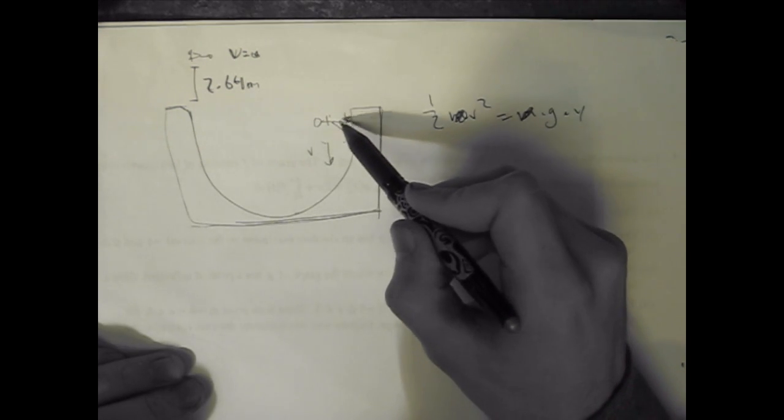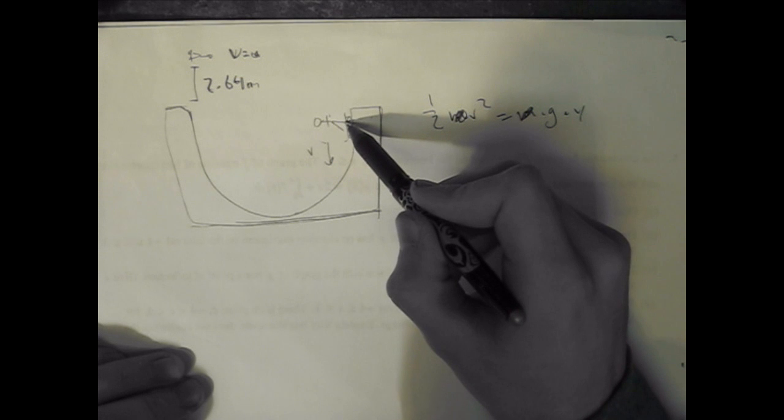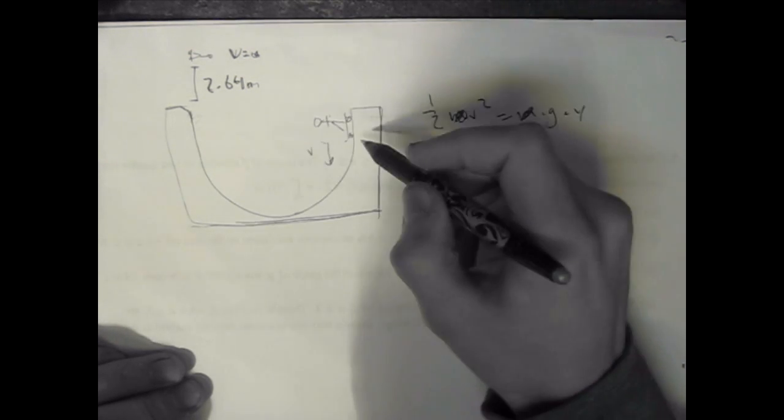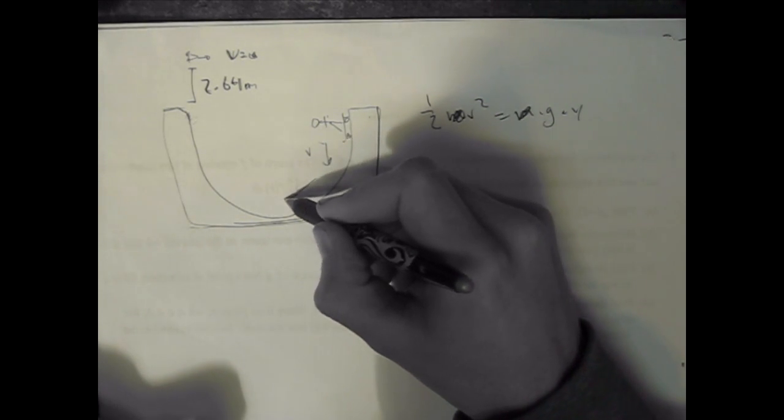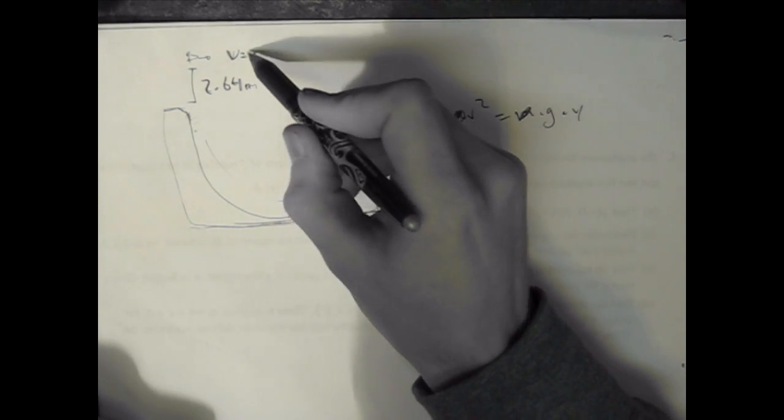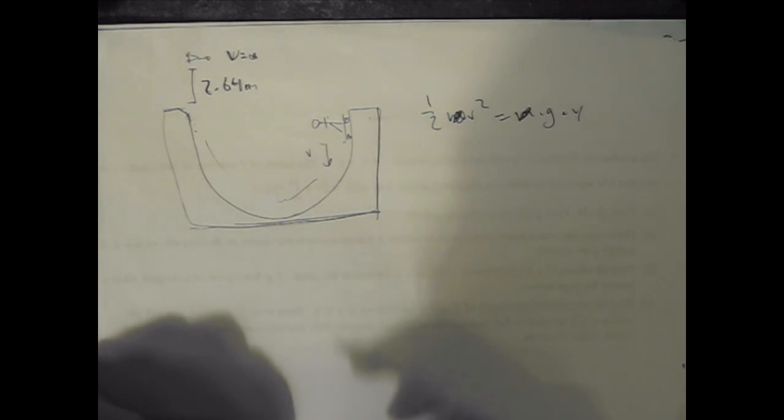This is his velocity right here. This is the velocity we're trying to find. This velocity right here is going to be the exact same velocity as the one right here, because since there's no friction, whatever speed he gains here gets lost here. And the velocity at the top is going to be zero, so you can assume that he's at rest right there, right before he starts to fall down again.